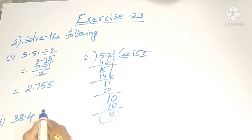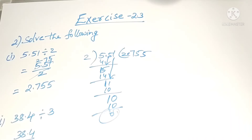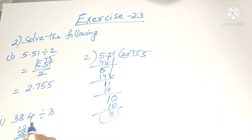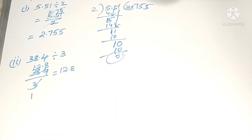38.4 divided by 3: three ones are three, three twos are six, two will be there — twenty-four. Put the decimal point: three eights are twenty-four, so this will be 12.8. The answer is 12.8. Now the third one: 57.39 divided by 6.